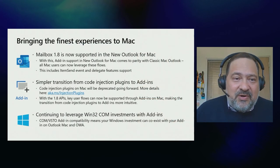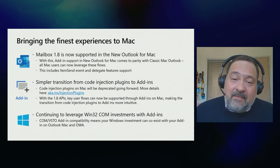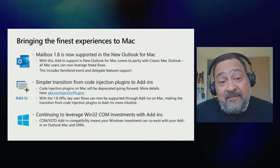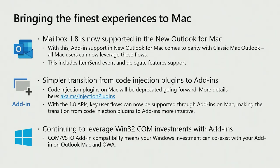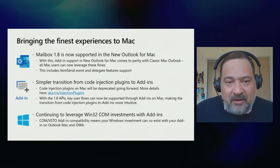Now I'm going to switch gears to another important topic: Mac. I have a message for our Mac developers. Regarding the new Outlook for Mac, Mailbox 1.8 is now available, which means you can now access the item send event and implement block-on-send scenarios. You also have access to the delegate feature, which has been highly requested. The new Outlook for Mac is getting up to speed with the latest on other platforms — next will be 1.9, then 1.10 with all the event-based features shown in this video. The investment is ongoing and we will reach parity very soon.